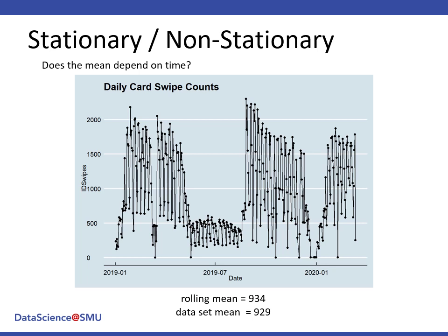In addressing the first condition of stationarity, there does appear to be a dip in the traffic in the summer of 2019 and others during breaks. Overall there does not appear to be strong evidence that the mean is changing with time. We found the weekly rolling mean to be 934 and it was almost equal to the data set's mean of 929, which is one more bit of information pointing to the mean not being dependent on time.